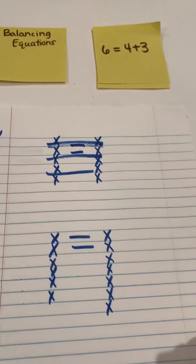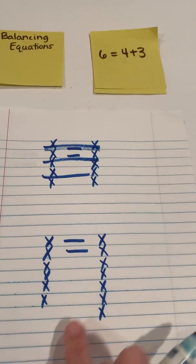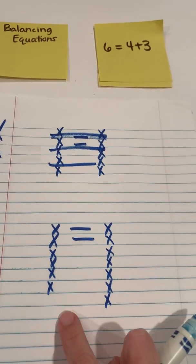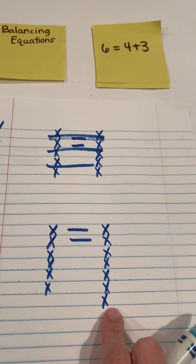And I can see that is false. 6 is not equal to or the same as 4 plus 3 because 6 is not equal to 7. So that would be false.